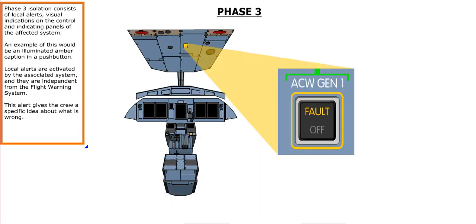Phase 3 Isolation consists of local alerts, visual indications on the control and indicating panels of the affected system. An example of this would be an illuminated amber caption in a push button. Local alerts are activated by the associated system and they are independent from the flight warning system. This alert gives the crew a specific idea about what is wrong.